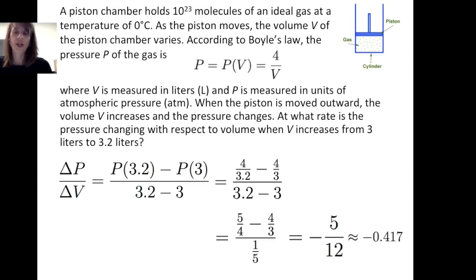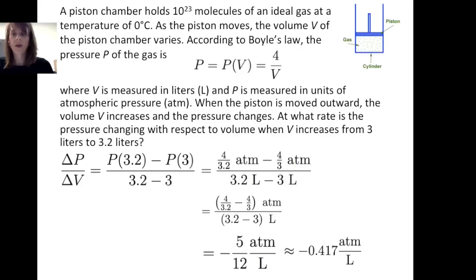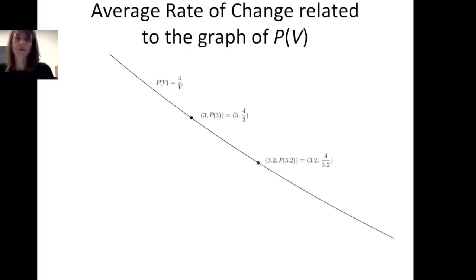The average rate of change of pressure with respect to volume on the closed interval from 3 to 3.2 has units associated with it. Since pressure is measured in units of atmospheric pressure and volume is measured in liters, the units associated with this average rate of change are units of atmospheric pressure per liter. We can also associate this average rate of change to the graph of the pressure function.